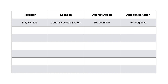The first receptors to discuss are M1, M4, and M5 muscarinic receptors, all located in the CNS. They control cognition. When you give somebody an agonist at any one of these three receptors it has pro-cognitive effects — it helps them learn, pay attention, speak, and perform spatial and verbal tasks. Conversely, an antagonist at M1, M4, or M5 has anti-cognitive effects, making it harder to learn and perform cognitive tasks.